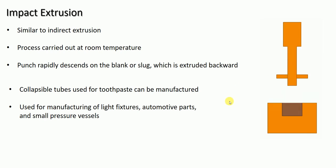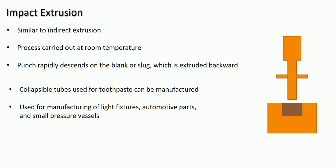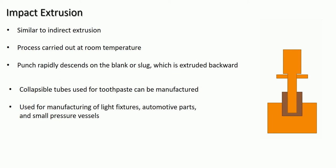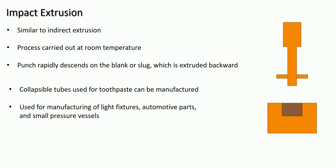This animation shows the impact extrusion process. Here the punch is rapidly descending on the raw material or the slug, which is kept in the die. As soon as the punch descends on the slug, the slug extrudes in the backward direction — that is, in the opposite direction to the movement of the punch. That is why it is called impact extrusion.